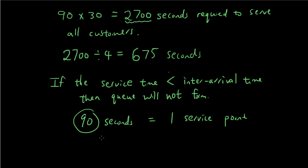So, if we divide this, 90 seconds divided by 2, which is what the service time will be if we have two service points. So, 45 seconds if there are two service points. When there is one service point, it's 90 seconds. When there are two service points, it's 45 seconds.